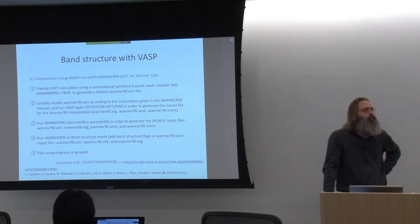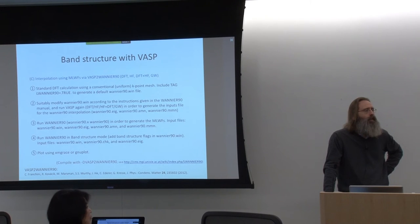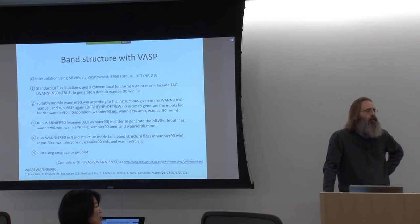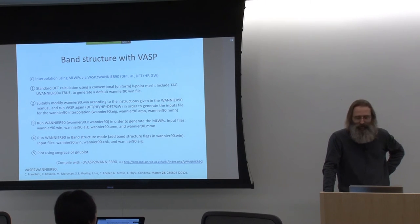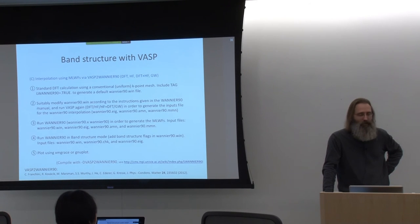Is the tendency to make d-bands wider universal for hybrid functionals, and is there a reason for that relating to the CO module? Yes, the tendency is universal, and there are definitely reasons for that, but they can't be explained quickly here.